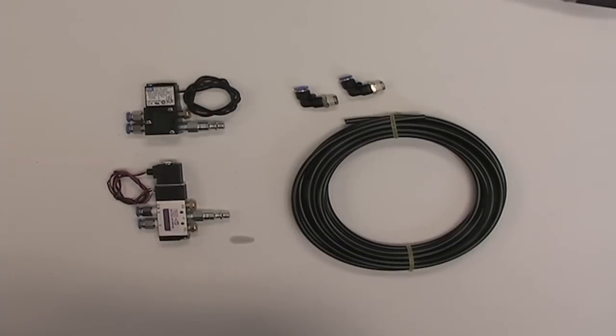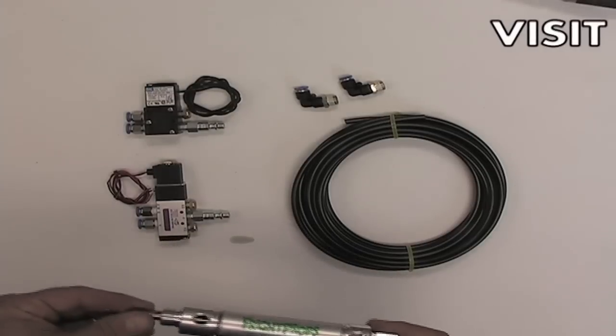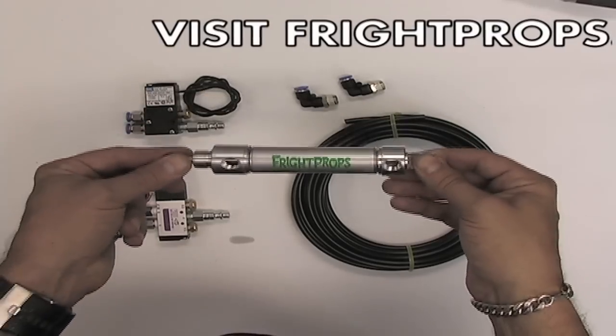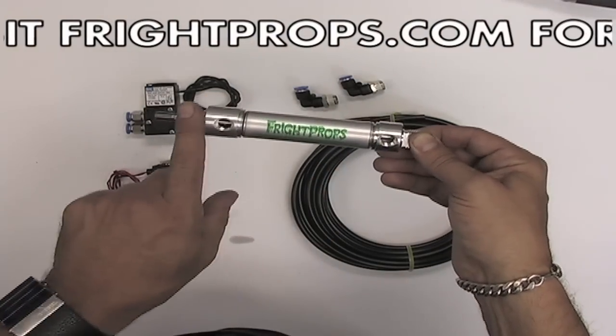This video demonstrates what comes with the Fright Props Double Acting Hookup Kit. The Double Acting Hookup Kit is for use with a Double Acting Cylinder. A double acting cylinder has air that goes into the bottom and the top.